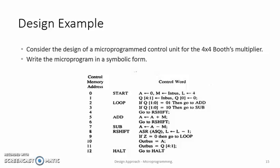So far we learned about what is microprogramming and how do we do microprogramming. Let us make the concepts clear by considering a design example. Consider the design of a microprogrammed control unit for a 4x4 Booth's multiplier. The very first step in microprogramming is to write a microprogram in symbolic form. This is the microprogram which is written for the 4x4 Booth's multiplier.